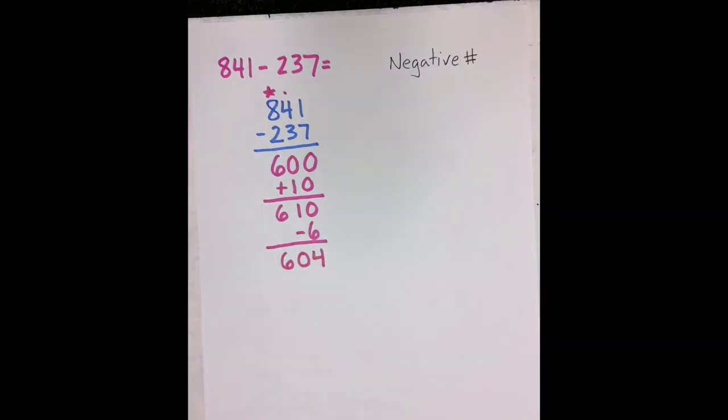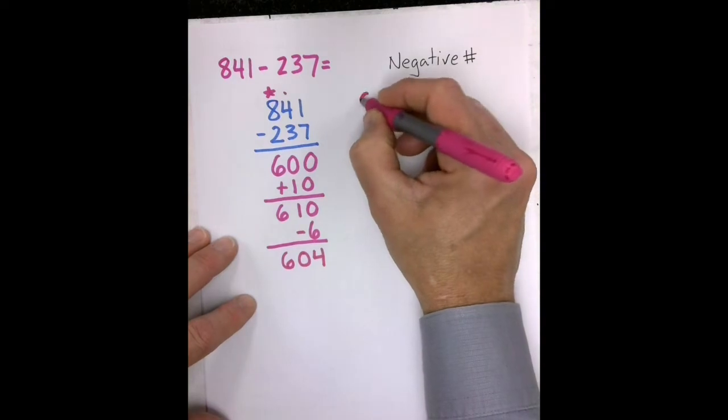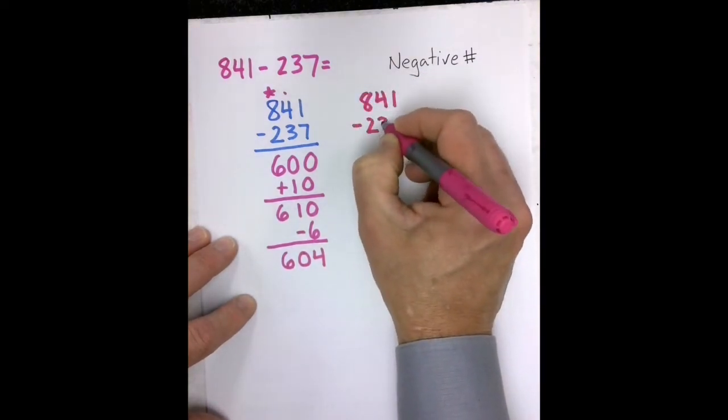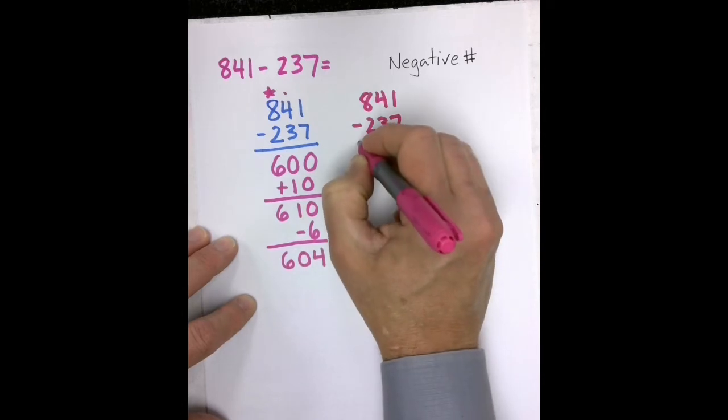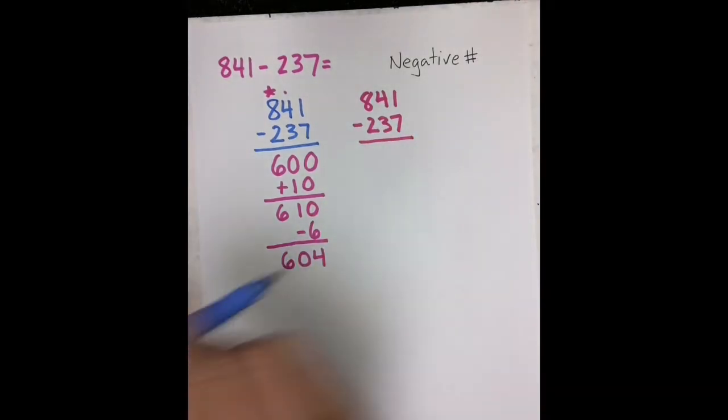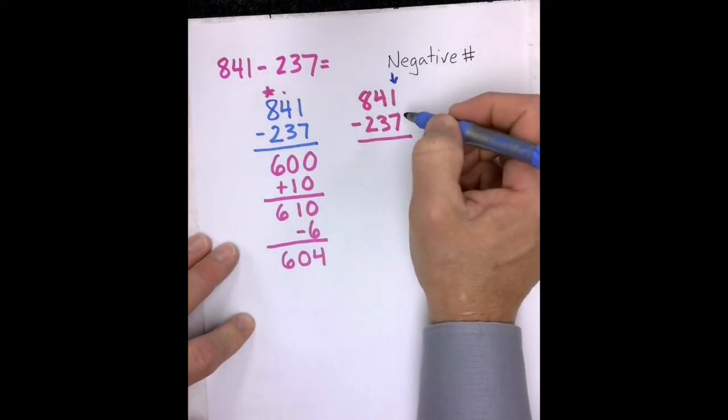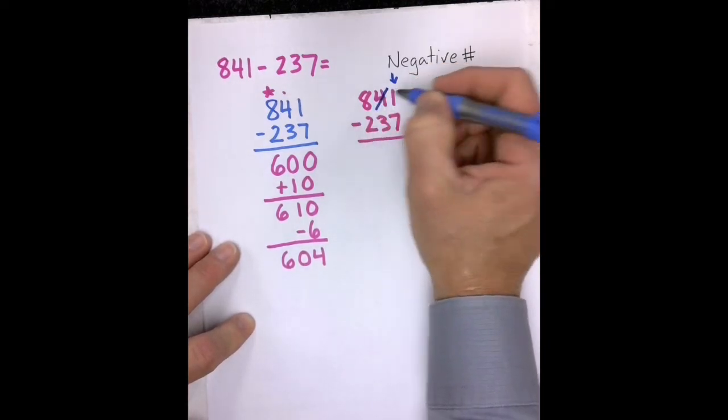Now let's compare that to the standard algorithm, and see if we end up with the same number. And then you can decide which one is easier. So in the standard algorithm, I would start here.